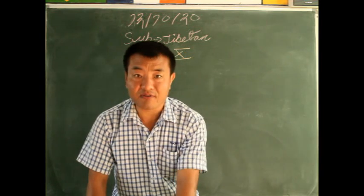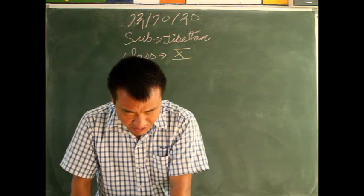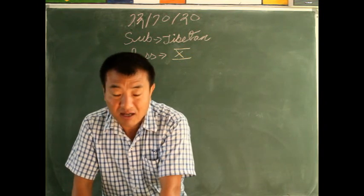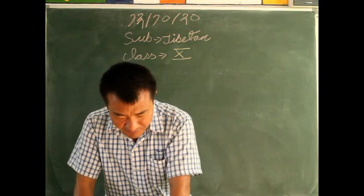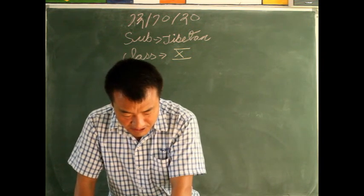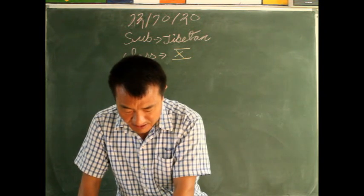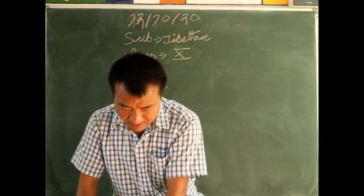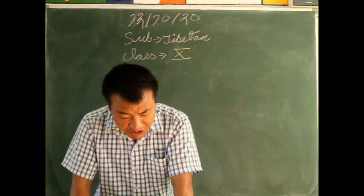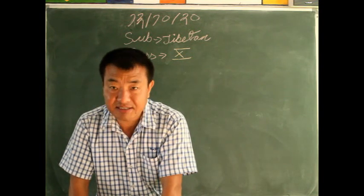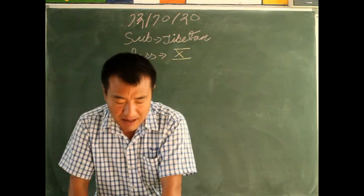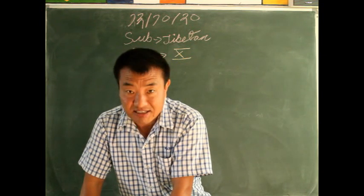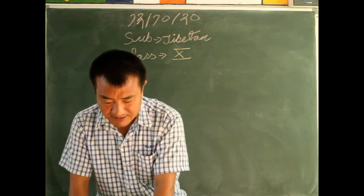He gave us very good advice on how to learn and how to get a very good education. First I learned the capital letter Uchen, then he taught me the small letter Umi. After that, he told me to write on the blackboard — he would write on the blackboard and I had to copy that. The blackboard is called jang sing. I learned for eight months on the blackboard. After that, only he gave me to write on the paper.